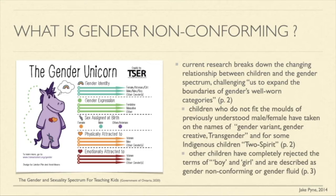This picture here is actually a spectrum for teaching kids — it breaks down the differences between identity, expression, physical attraction, and the assigned sex at birth. I just wanted to show you a quick video here in their own words.